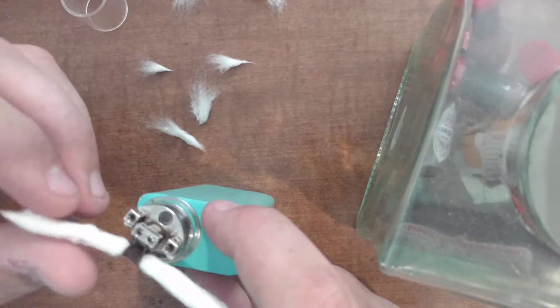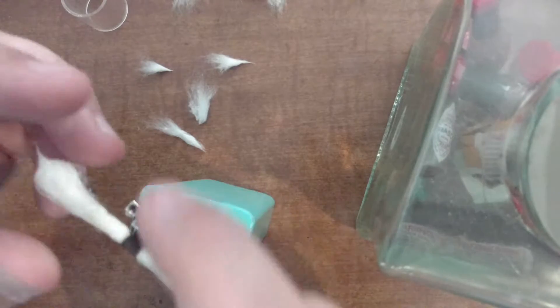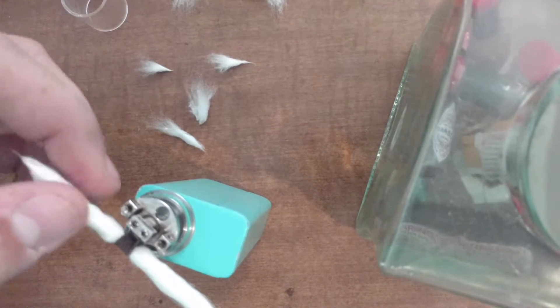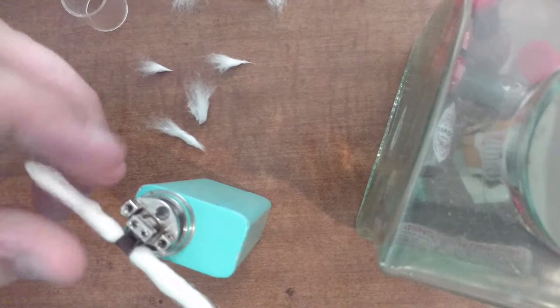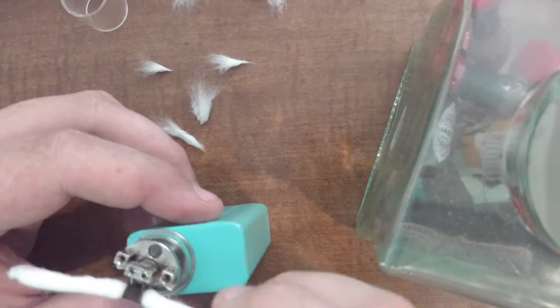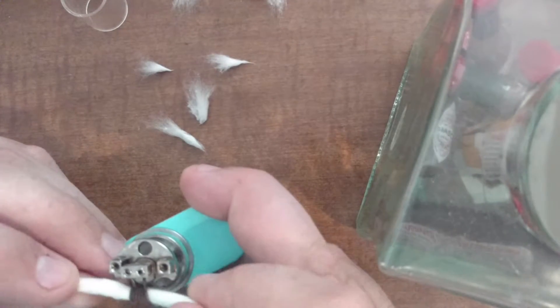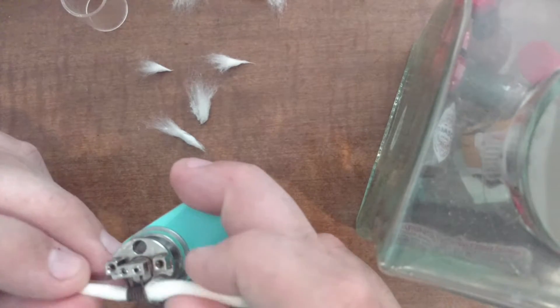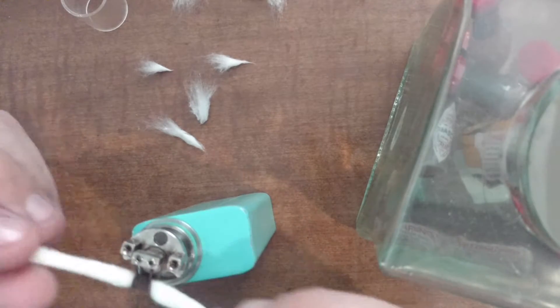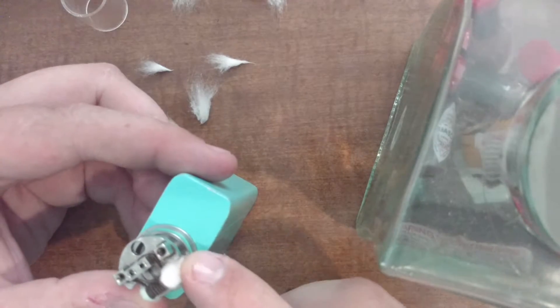So now we're going to un-bunch the cotton. Just kind of pull it apart a little bit. I'm going to kind of fluff it back up now. Get those cotton fibers kind of loose again. You want to pull the cotton to kind of loosen it up under the coil as well. Because that's where you really want it to not be super tight. So that's still not enough cotton there.